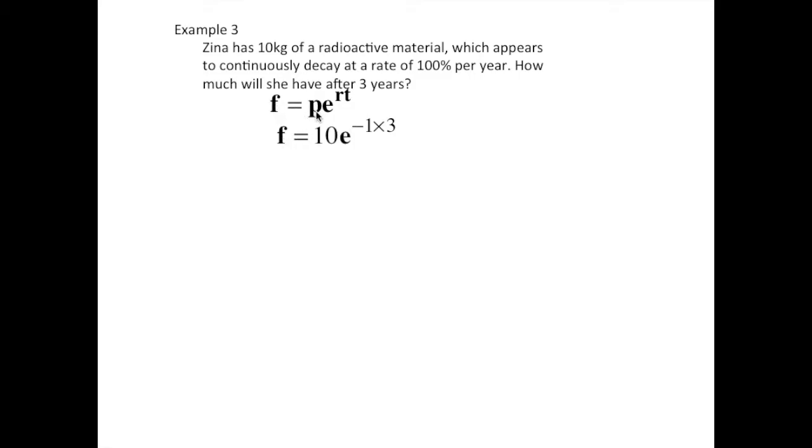So the principal amount, we have 10 kilograms. The rate, it's decaying. We're losing 100%, so that's minus 100%, minus one. And the time is three years, so times three.